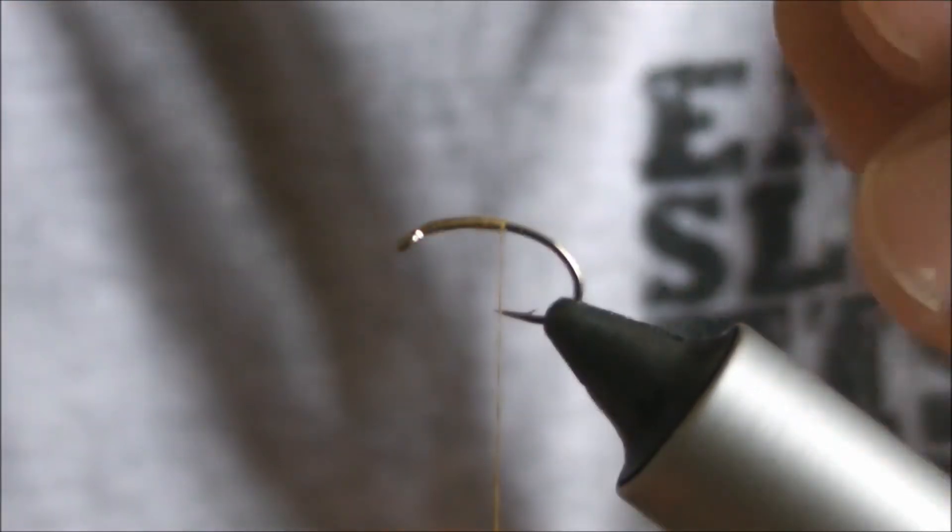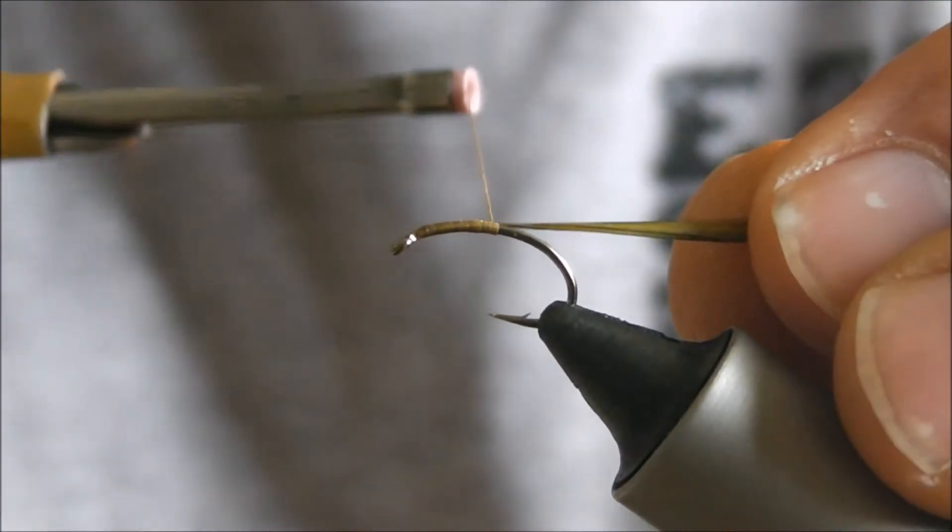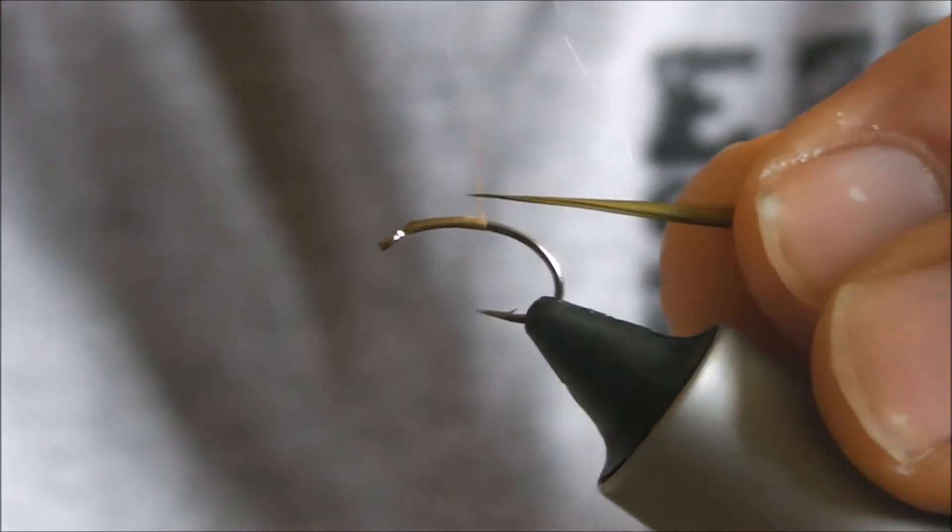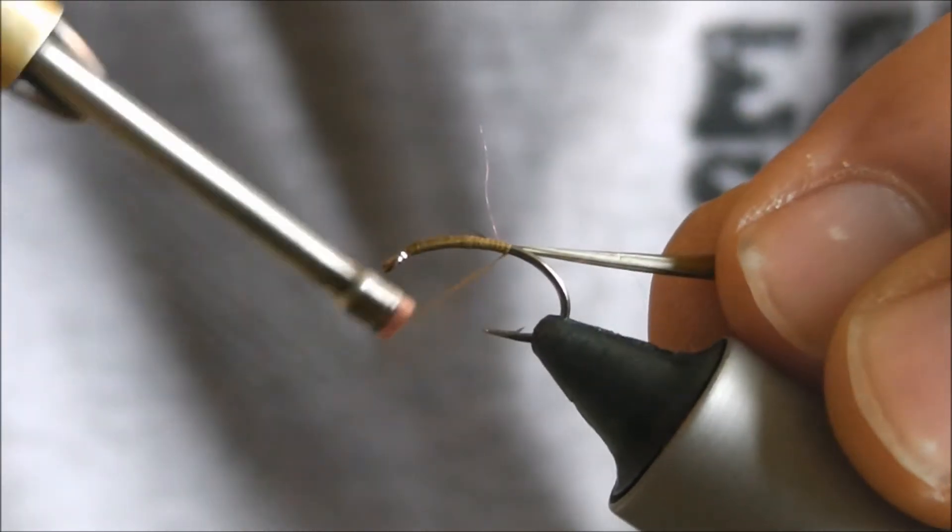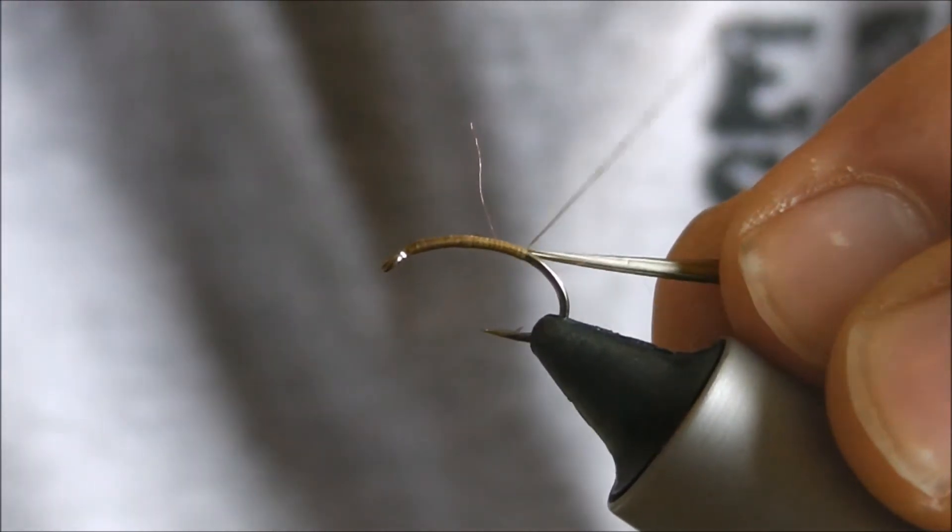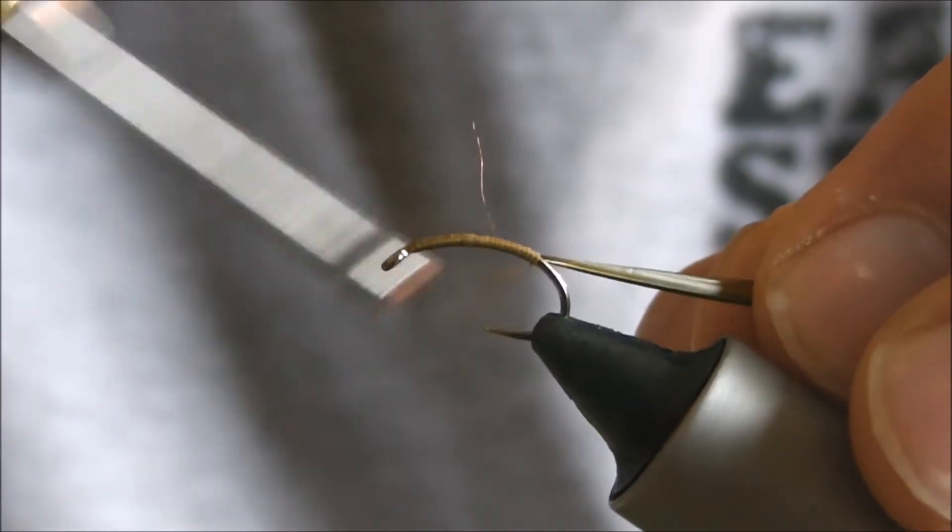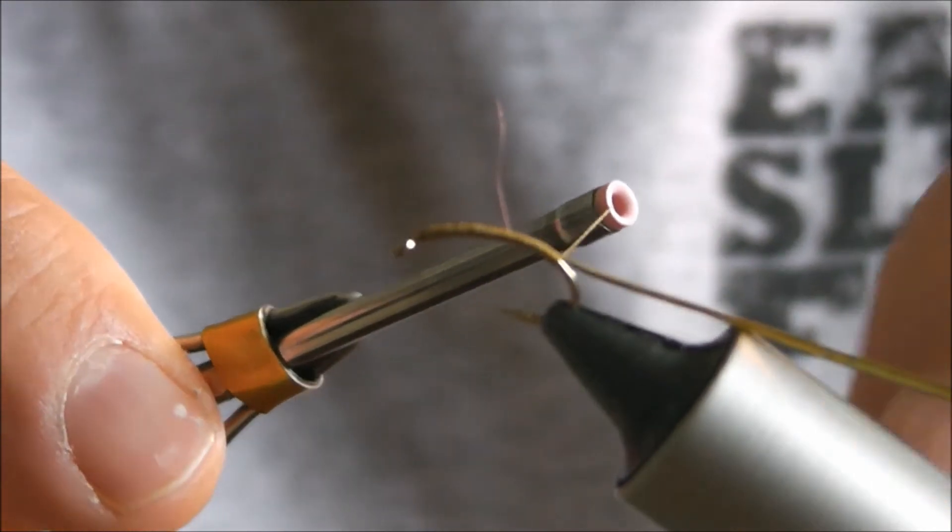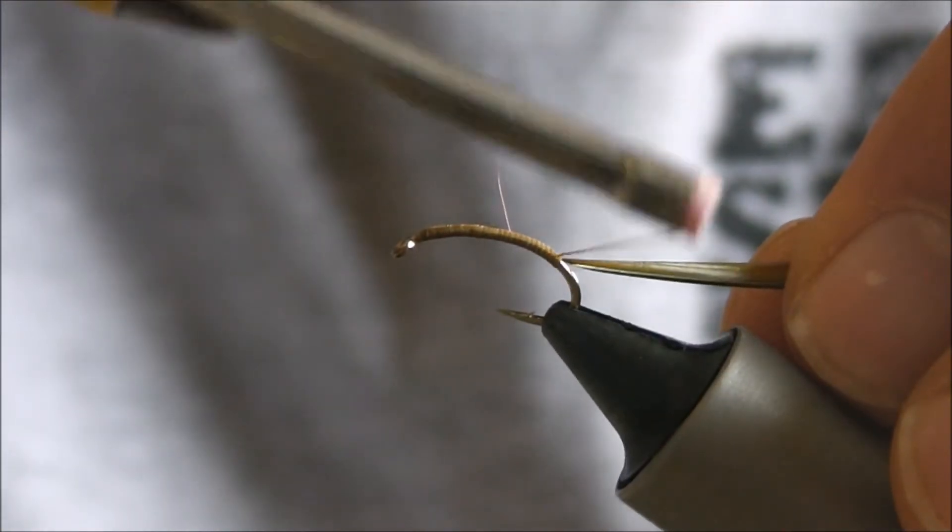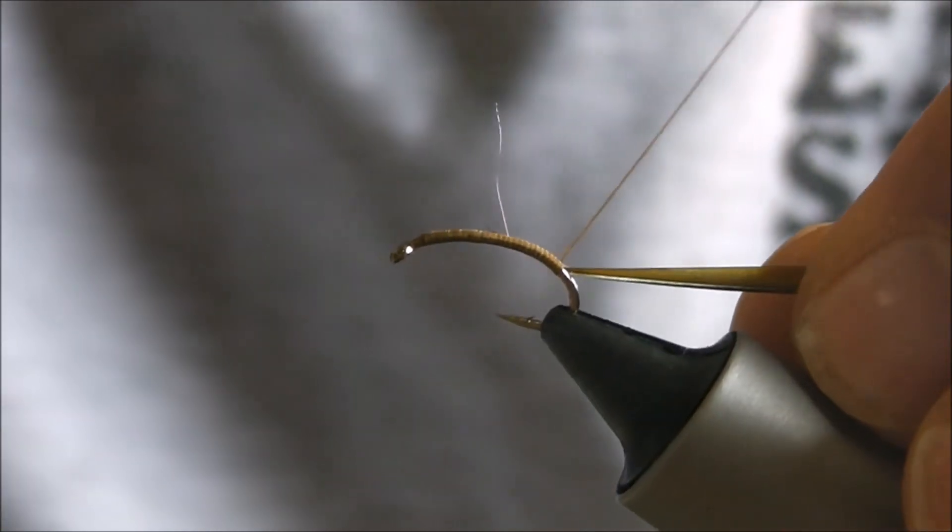Tie it in point first. It's got a natural curve to it, so have the curve facing outwards. Point first, and then go back to where you want your buzzer to start or finish, about here.